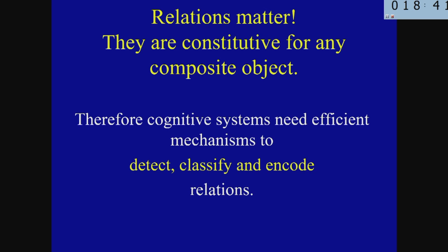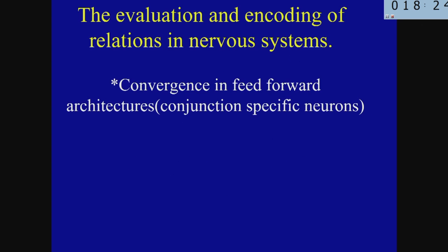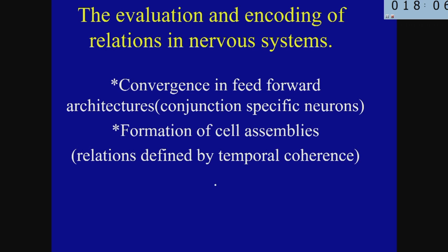Relations matter, because all composite objects are defined eventually by the specificity of the relations among their components. So cognitive systems need very efficient mechanisms to detect, classify, and encode relations. There are two different strategies applied in biological systems: the detection and encoding of relations by convergence in feed-forward architectures generating conjunction-specific neurons, or the formation of cell assemblies in which relations are defined by temporal coherence.